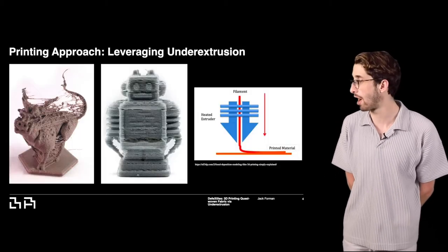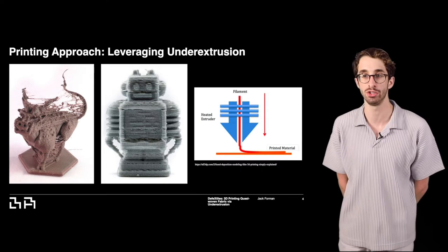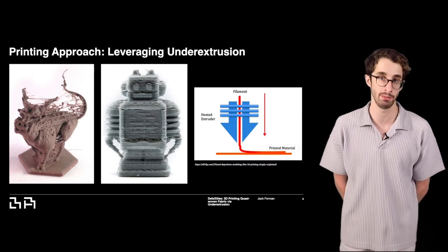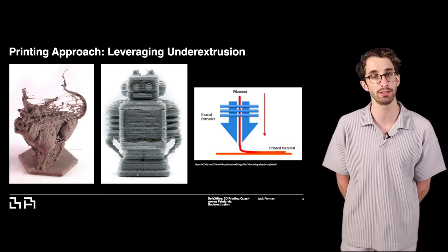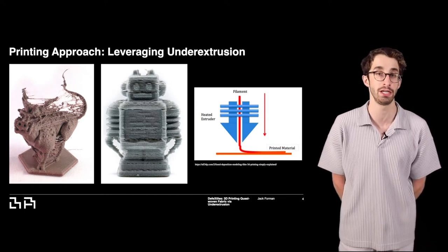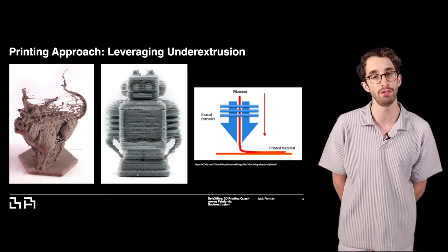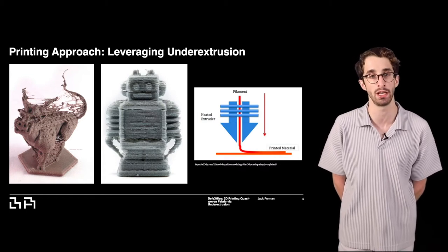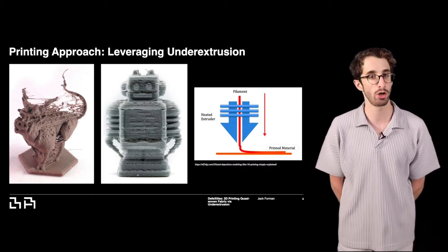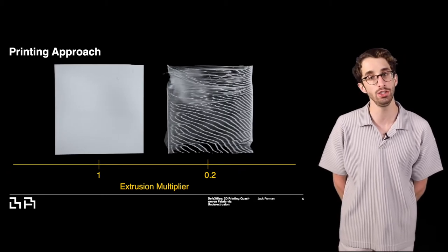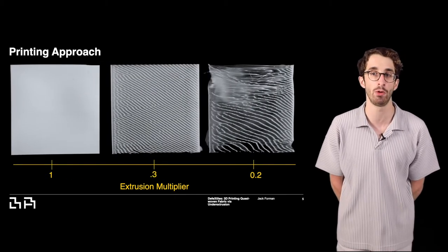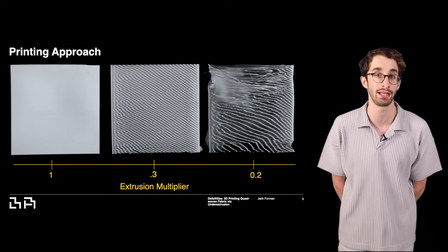Our approach leverages a common cause of print failure, under-extrusion, which causes prints to look like the images on the left. While defects have a bad reputation, in material science they're critical to engineer materials to have new properties. A defect is often seen as a feature once it could be controlled. In this work, we show that by carefully tuning our extrusion multiplier and print speed, we can introduce periodic gap defects that afford our prints with flexibility and textile-like aesthetics.